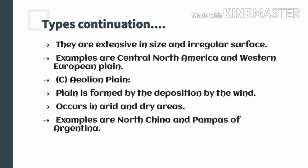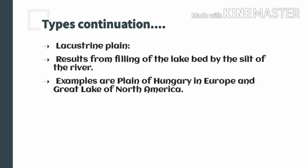The aeolian plain, also known as the loess plain, is the third type of depositional plain. It is formed because of deposition by wind, and it occurs in arid or very dry areas. An example of this aeolian plain can be seen in North China, which covers more than 2.45 lakh square kilometers, with a thickness of deposited sand of around 3,000 meters. It is also seen in the Pampas of Argentina.